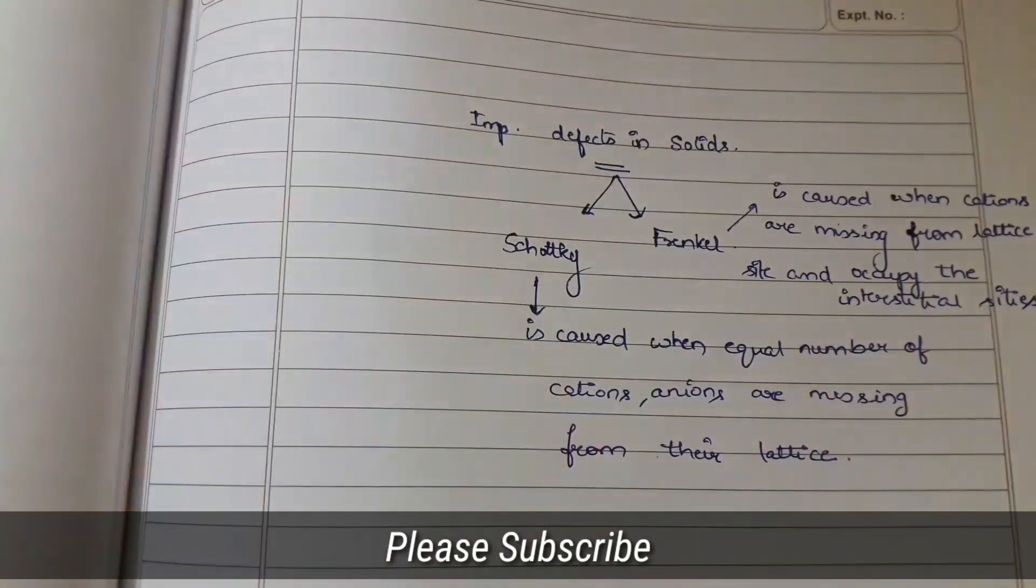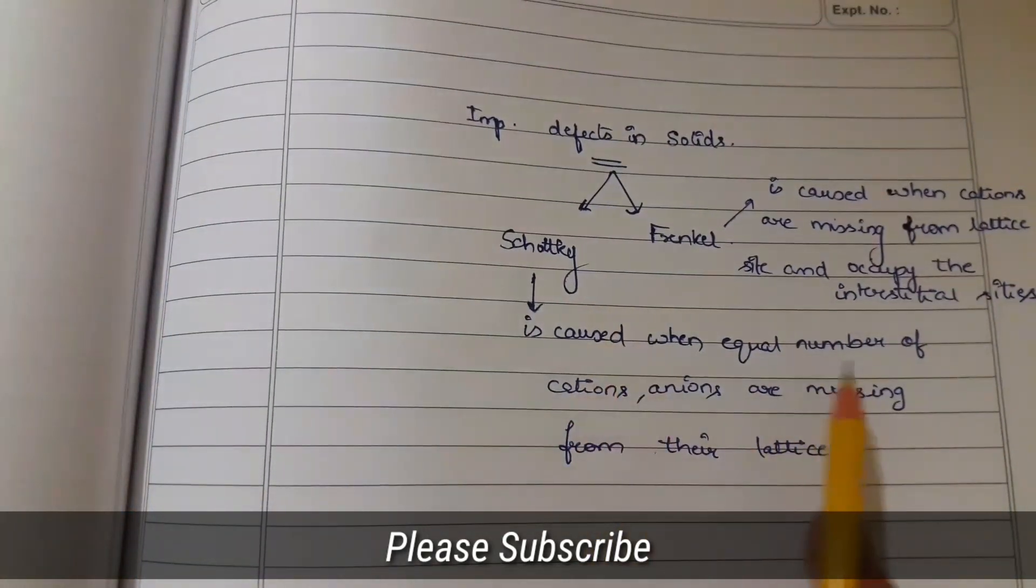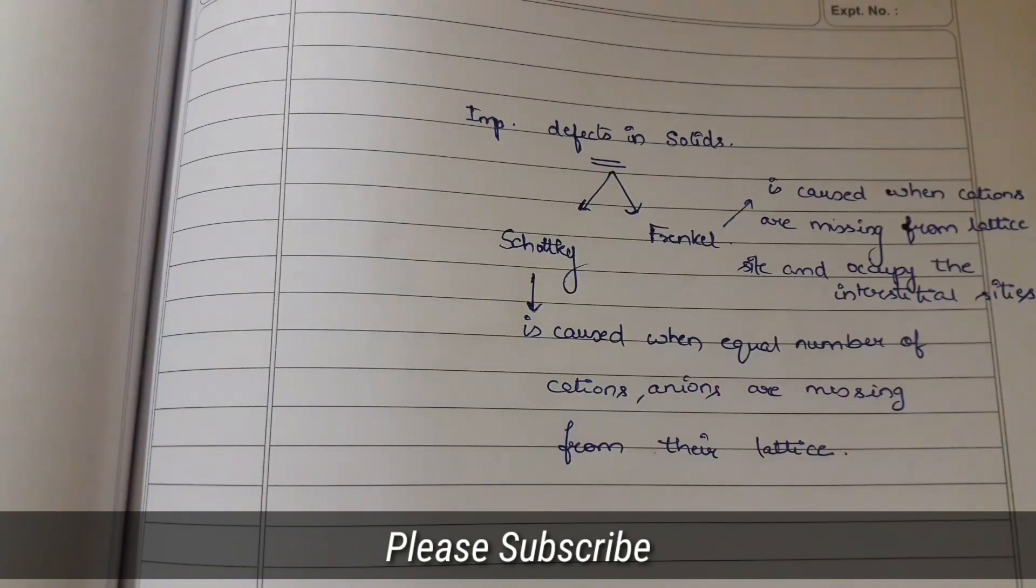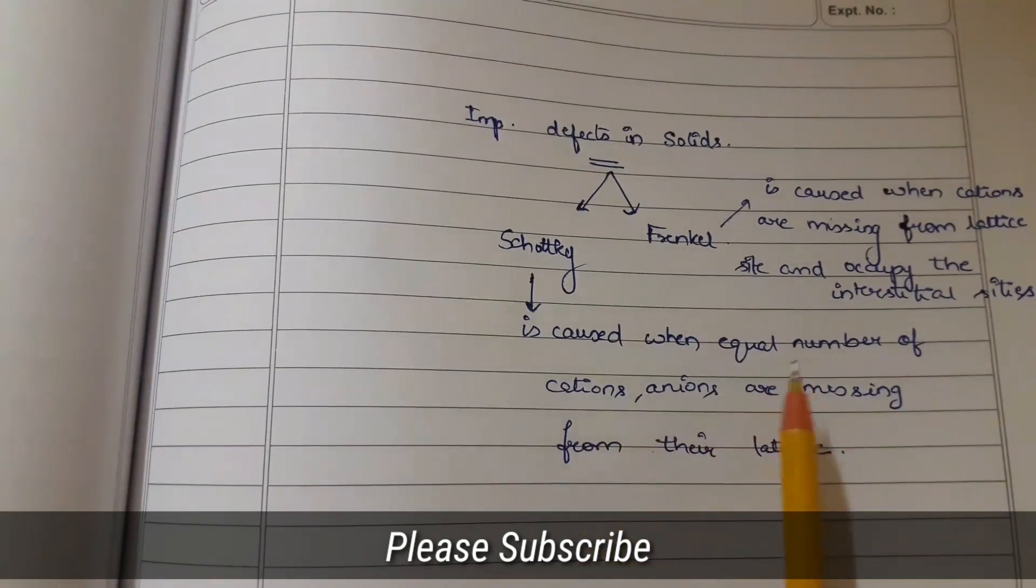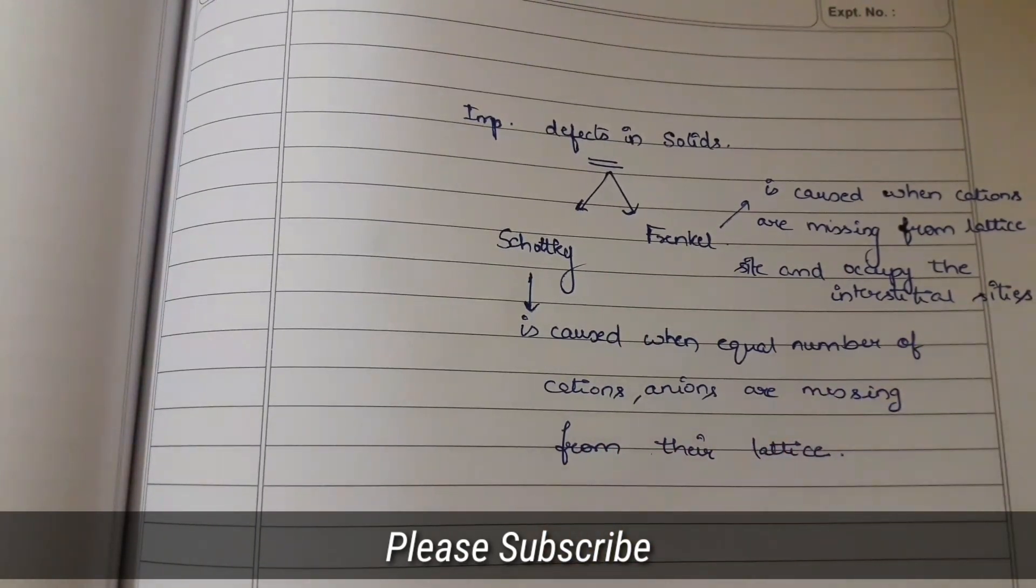This is basically two defects. Short Key Defects is equal number of cations and anions are missing. There will be a void found because of equal number of missing of cation and anion.